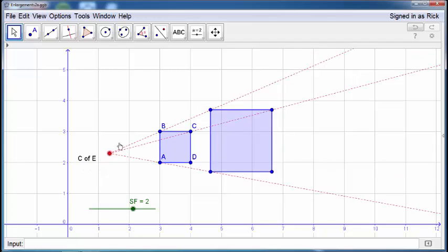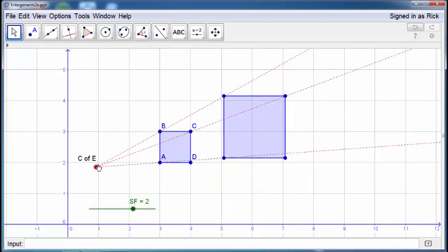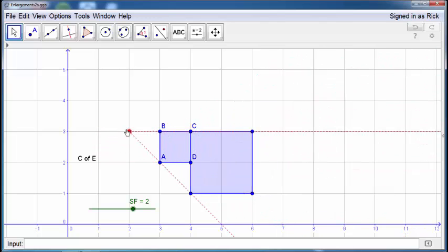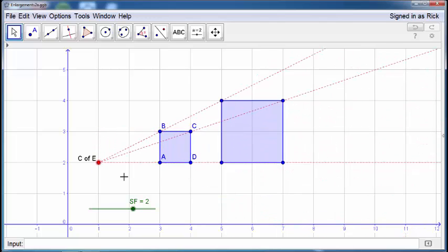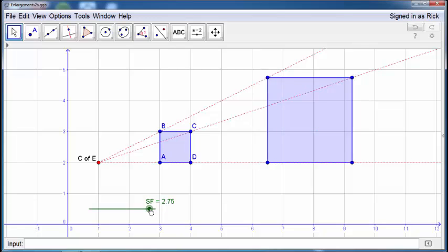The slider allows me to go up every 0.25 intervals, all the way up to a scale factor of three. In the previous video we already discovered that scale factor of three means the length, not the area, but the length of each side of the enlargement will be three times longer than the original.